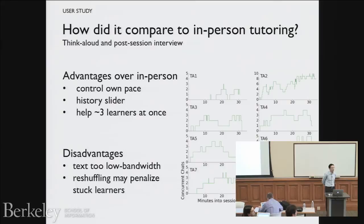Audience question: did you get that text-too-low-bandwidth complaint about the first system, Coachella? Response: that's a good question. The first system is low bandwidth too. Looking back at the chat logs, I don't remember that being an active complaint, but then again we didn't survey people on that specific question.